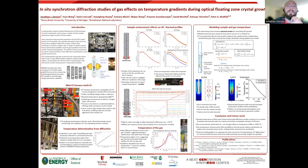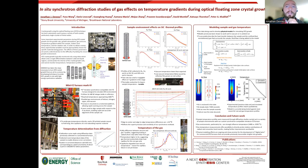In studies of silicon carbide, we reached temperatures of nearly 1600°C and found that flow rate has a minimal effect on temperature, but gas type can have a substantial effect on temperature when there is a large difference in thermal conductivity of those gases.